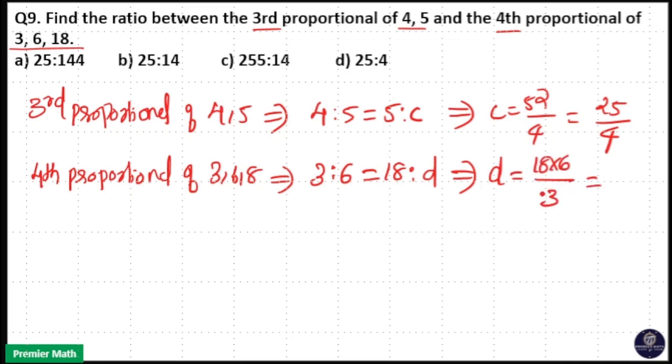That means D is equal to 18 into 6 divided by 3. That is 6 into 6, 36. So D is 36.